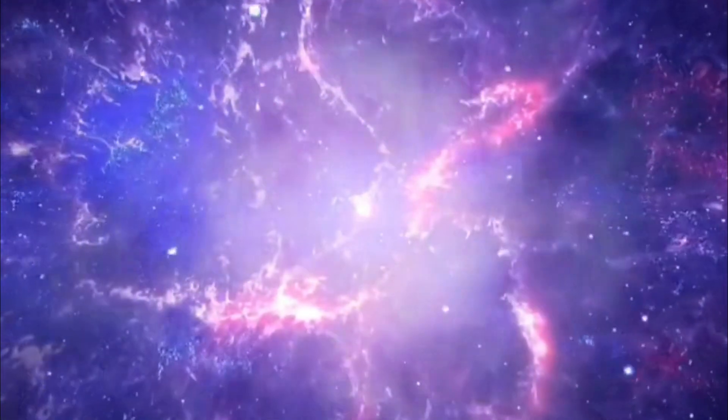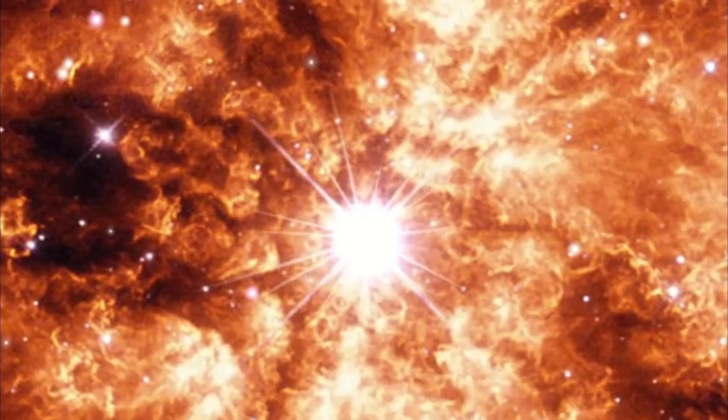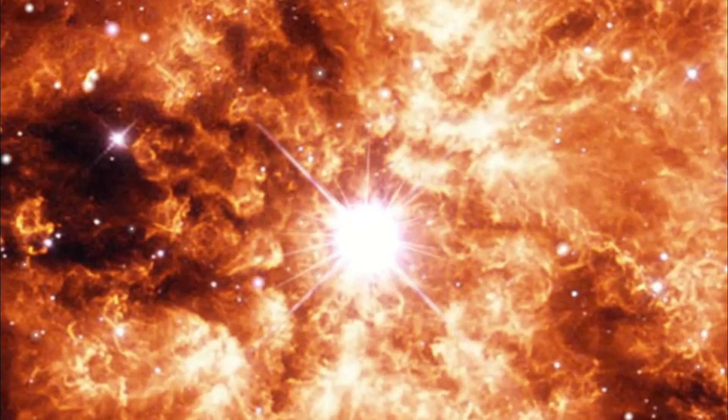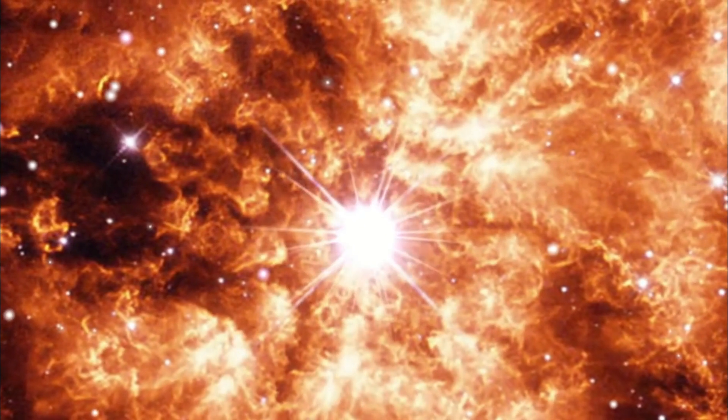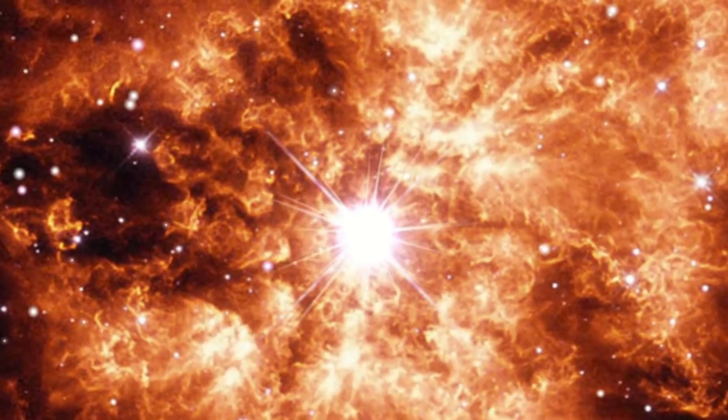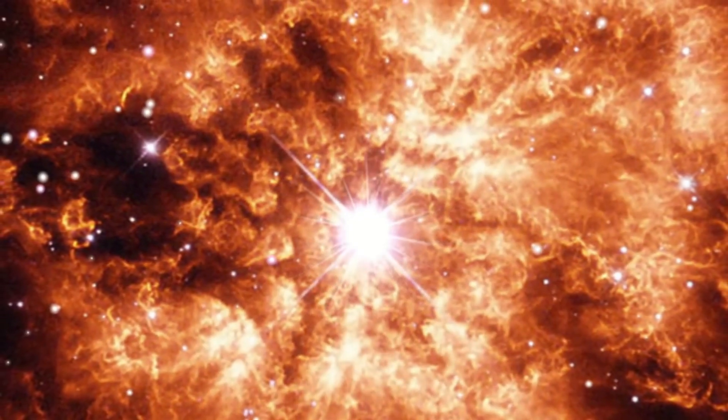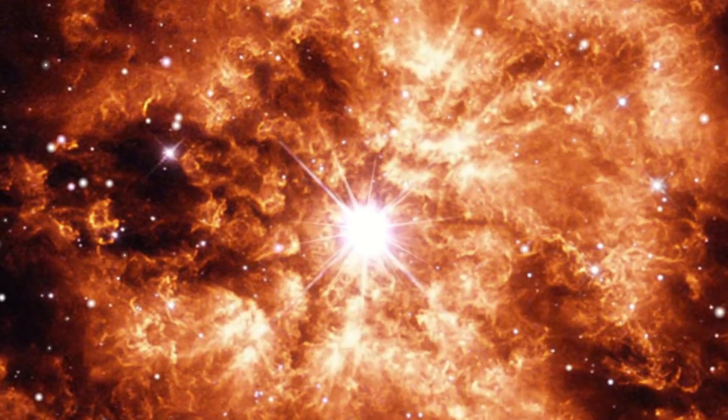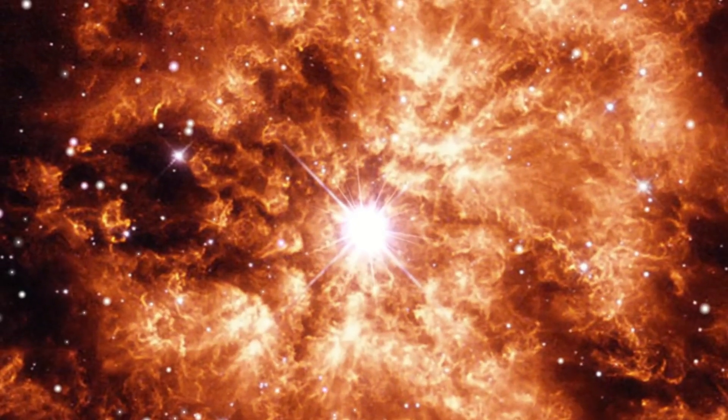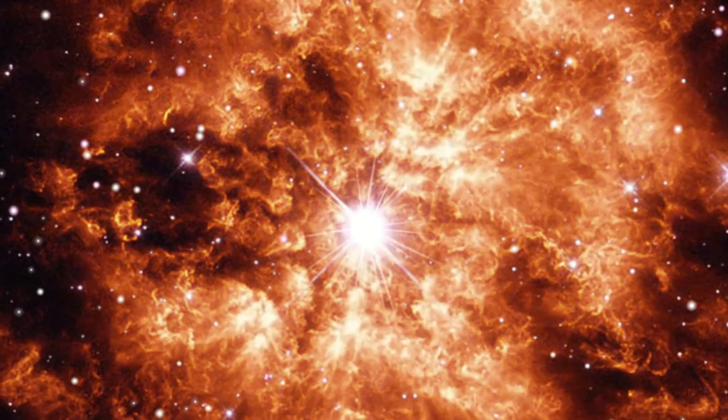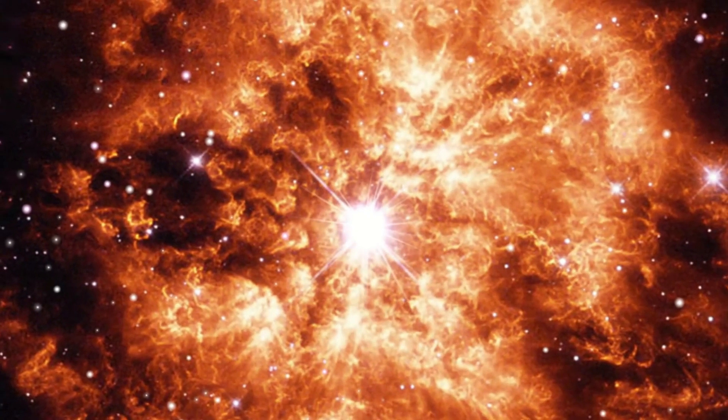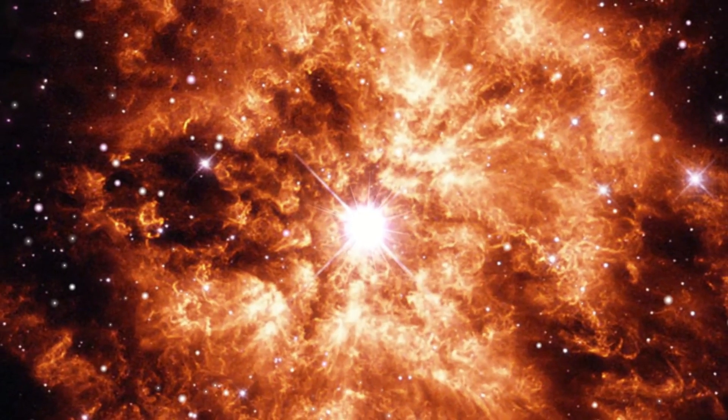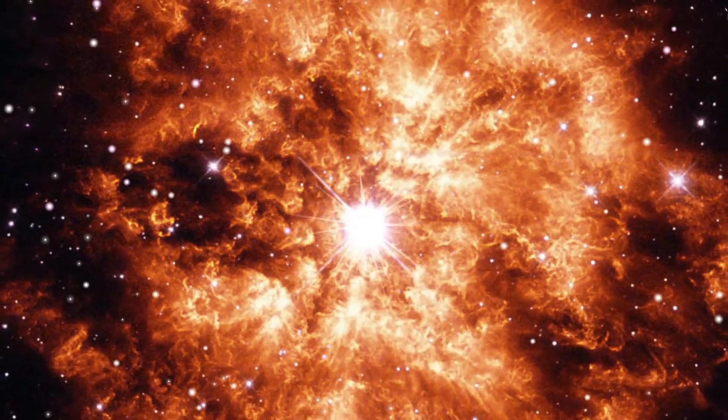So, why is Betelgeuse so important? Well, it's one of the closest red supergiants to Earth, about 725 light-years away. It's also one of the brightest stars in the night sky, so it's been an object of study for astronomers for centuries. Because of its size and mass, it's inevitable that Betelgeuse will eventually go supernova. But the timing is uncertain.